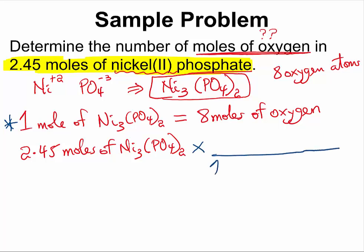which is that 1 mole of Ni3(PO4)2 will normally give us 8 moles of oxygen. If you cancel out the Ni3(PO4)2 and you multiply by your calculator,